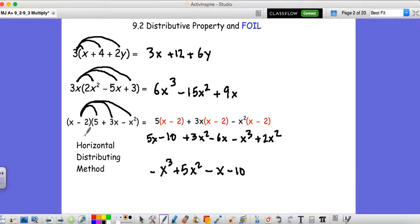So you can distribute the same way if you're doing a binomial times a trinomial. But you might get to distribute again. And then after that, you're left with just simplifying.